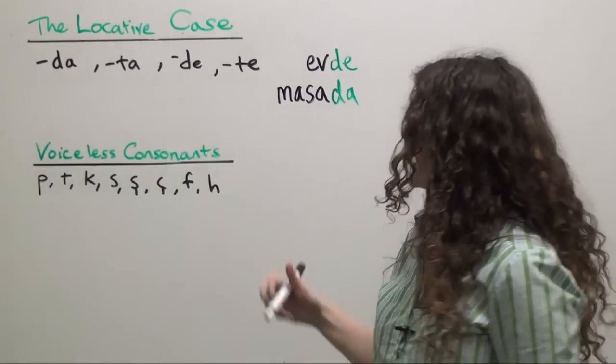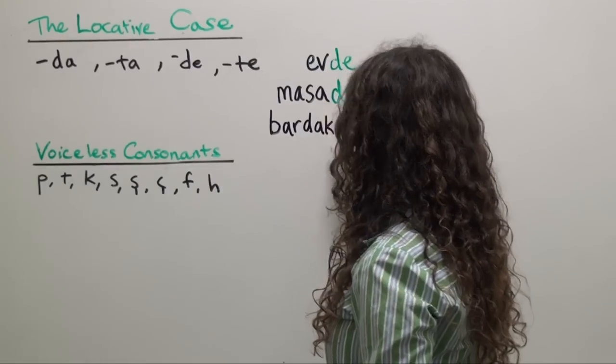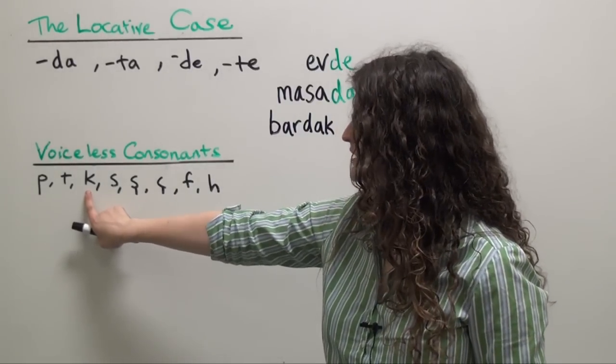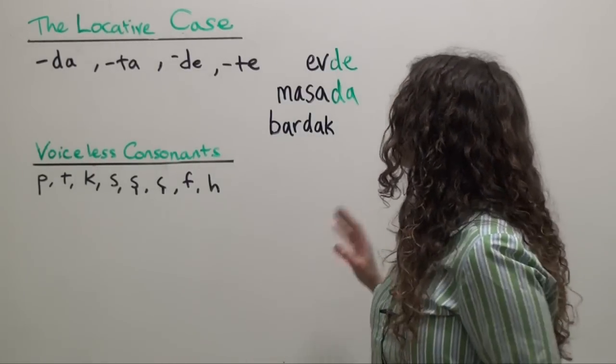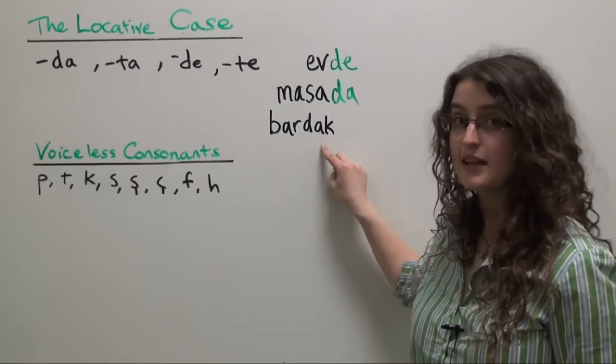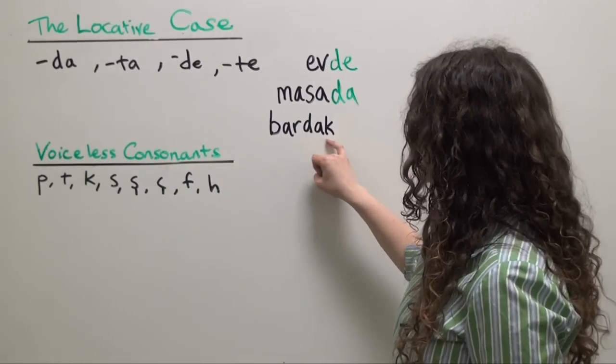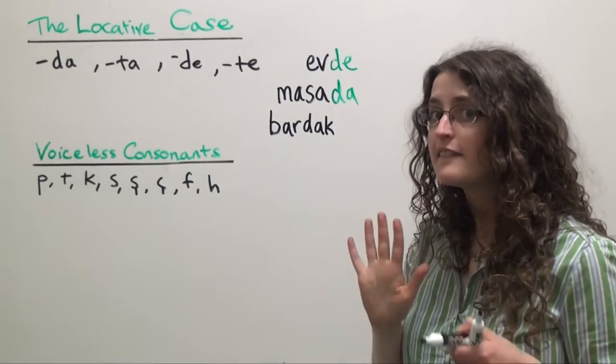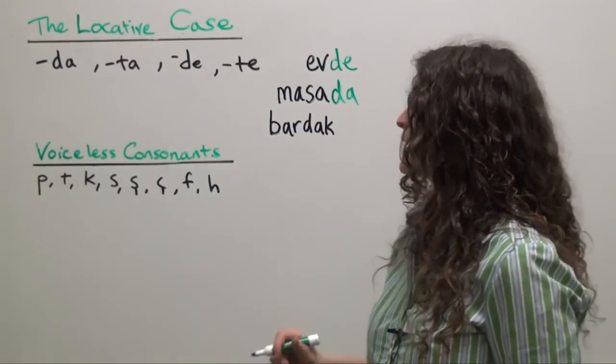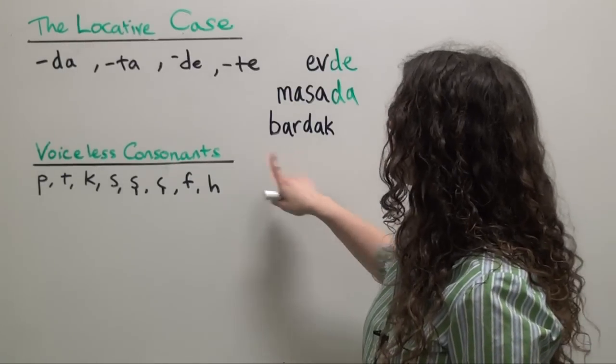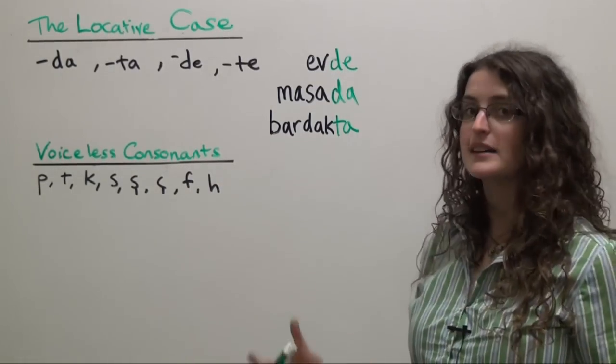The noun bardak, a glass. K, one of our voiceless consonants. You're going to choose a version of the locative case ending which not only agrees with bardak in terms of two-way vowel harmony, but which also begins with a voiceless consonant because bardak ends in a voiceless consonant. This may sound slightly complicated, it's actually very simple and you'll see it's easier to say this way. So for bardak we're going to choose bardakta. Bardakta, in the glass or on the glass.